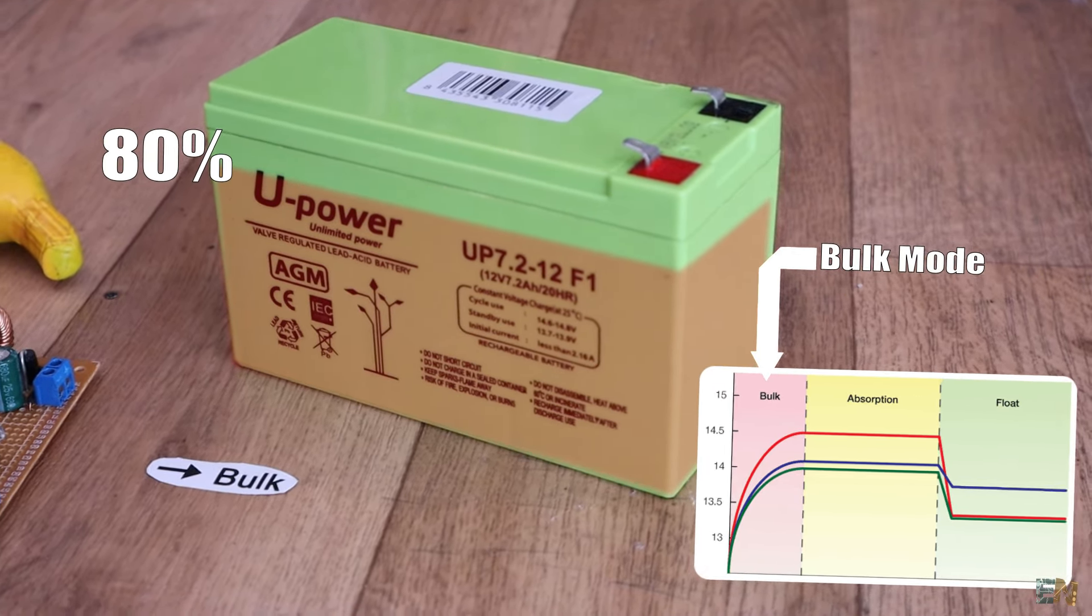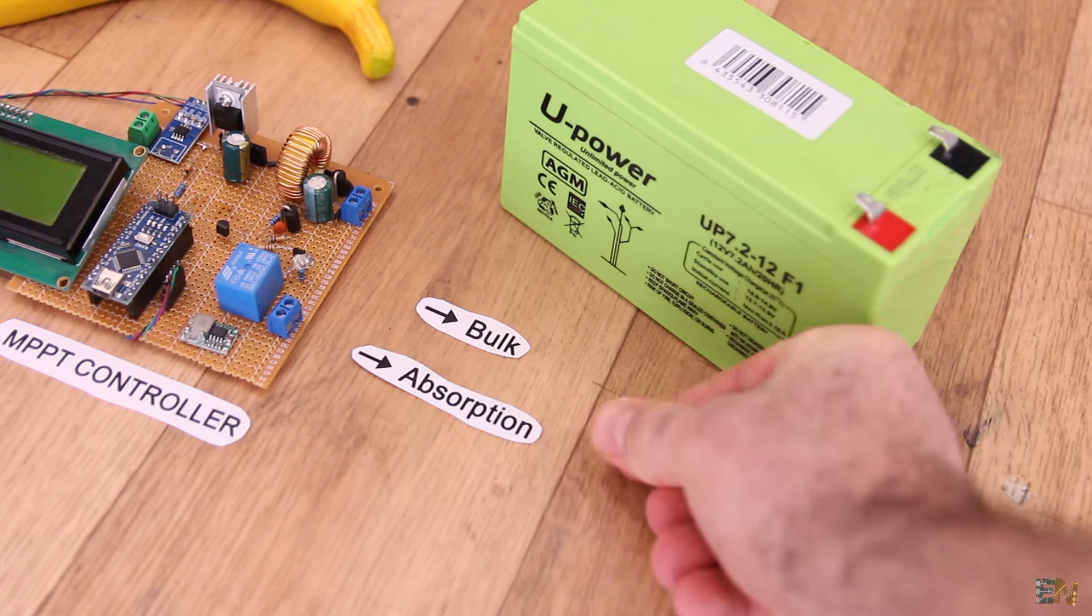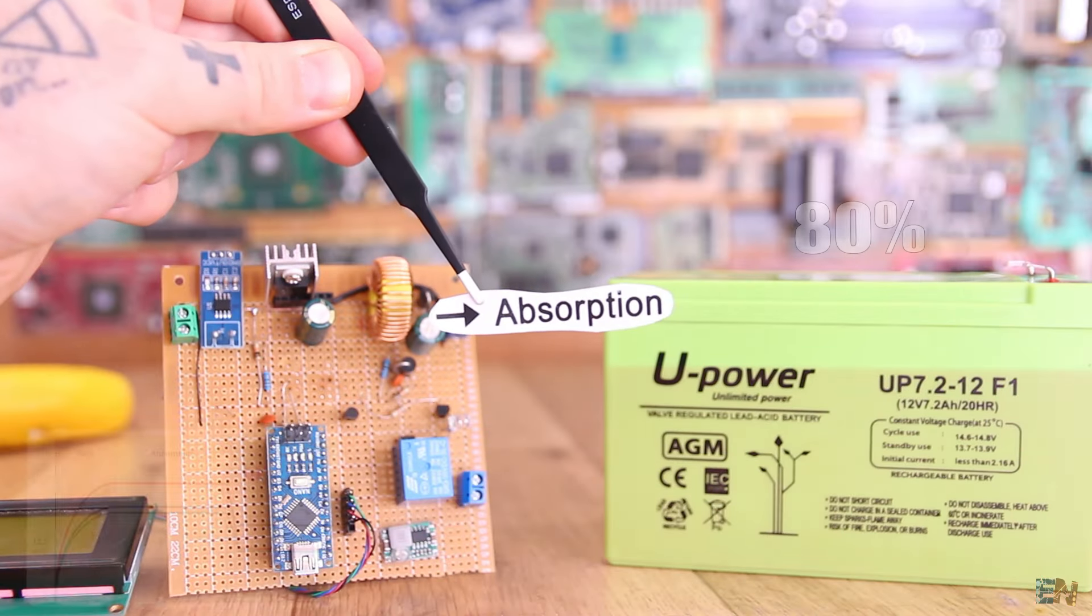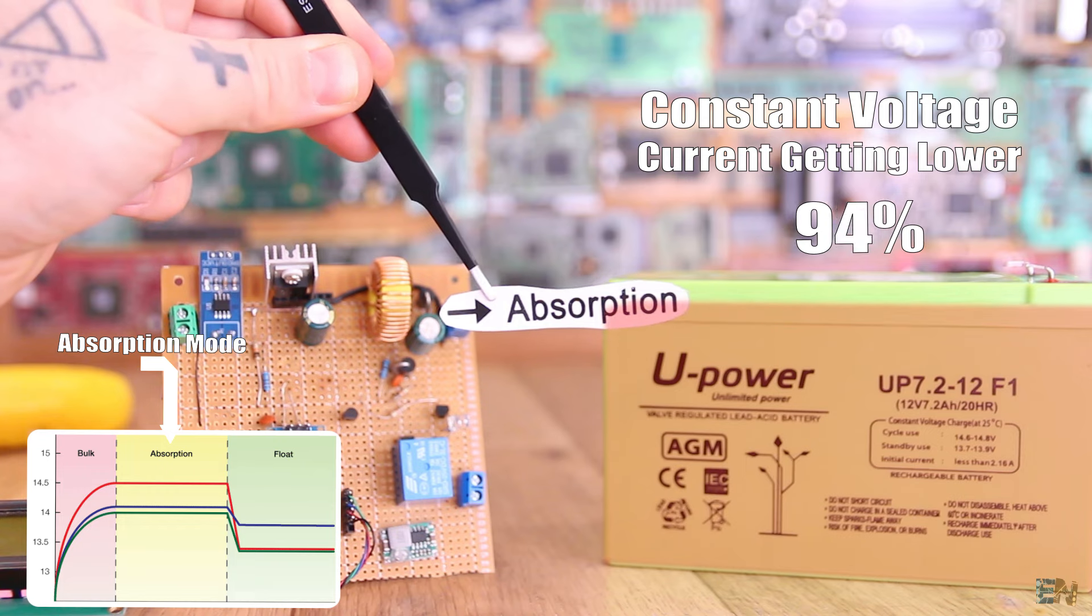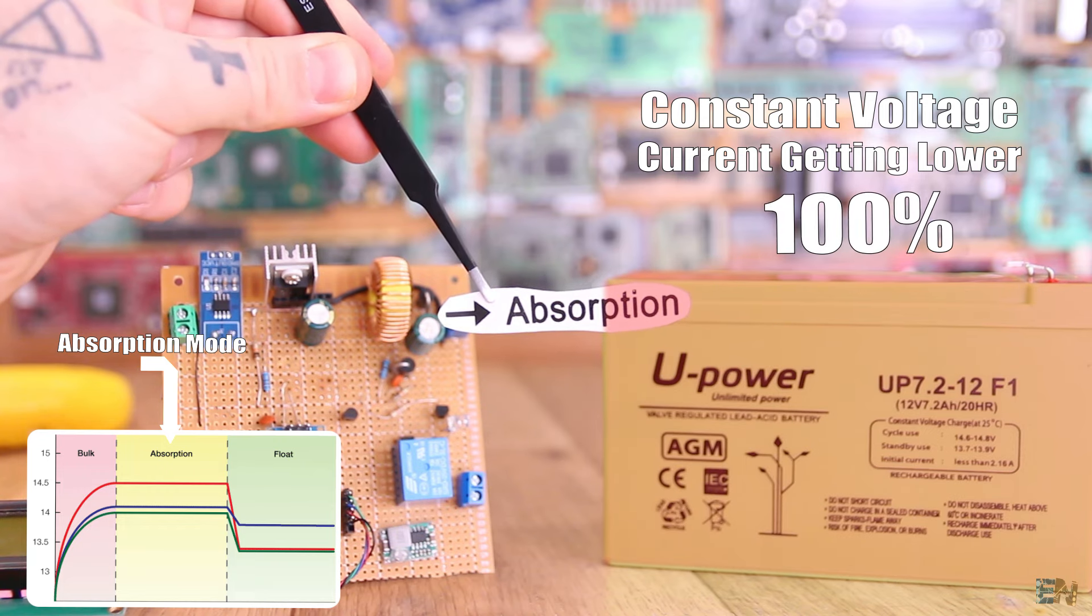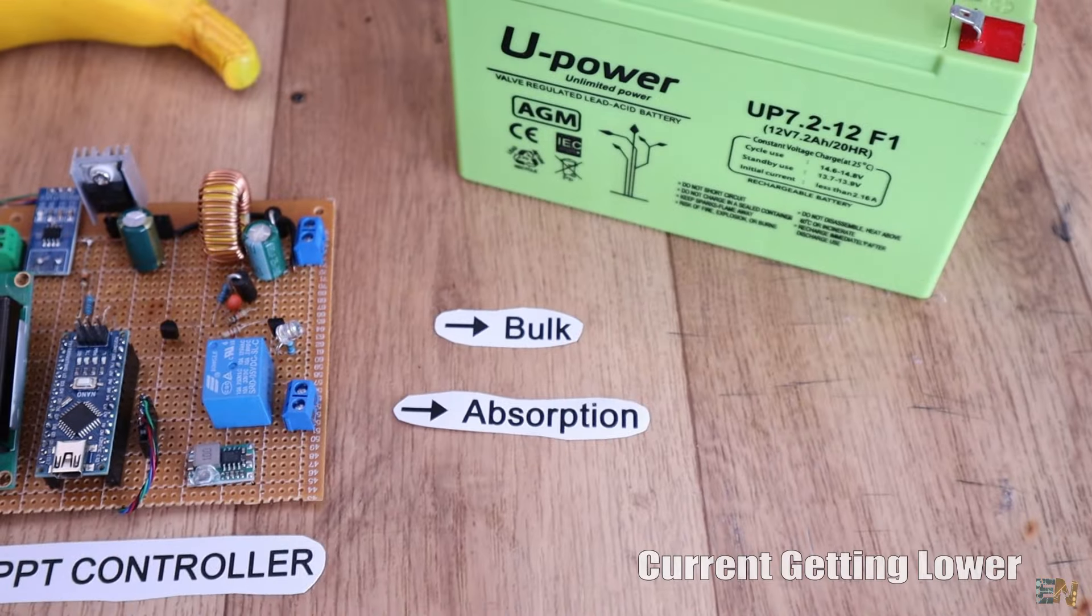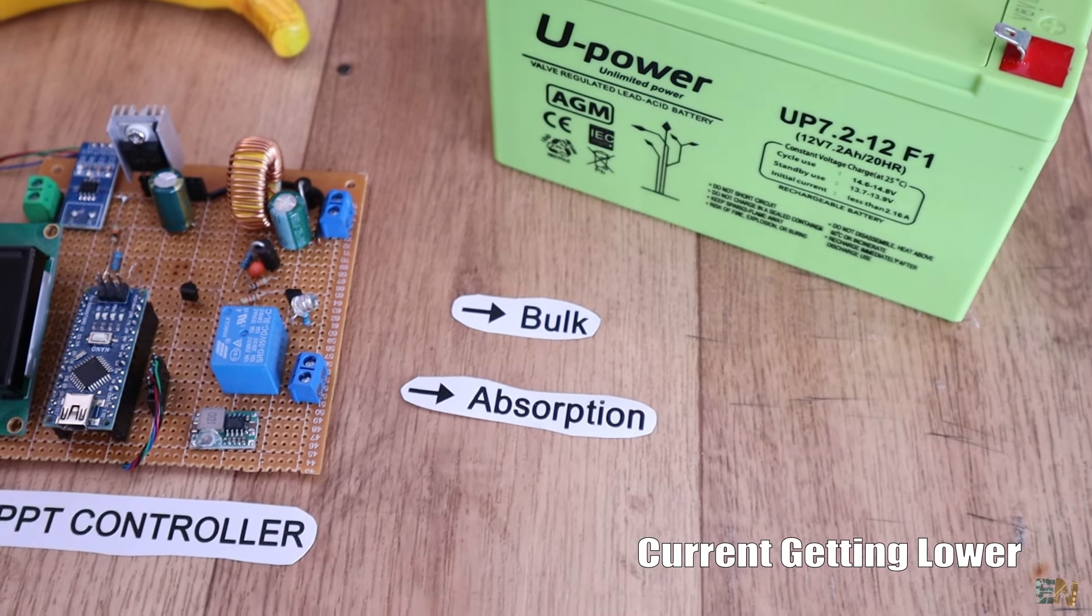When we reach a certain voltage, we then pass to the absorption stage. In this mode, we don't have a constant current anymore but a constant voltage. The voltage is kept by the controller at a specific value and then we will see the current getting lower and lower while the battery is charging the last 20%.